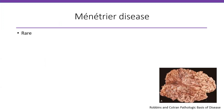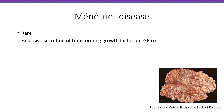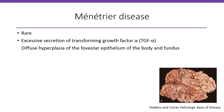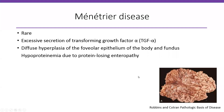Let's go over both of them. Menetrier disease is a rare disorder. Basically, you have excessive secretion of transforming growth factor alpha, TGF-alpha. You have diffuse hyperplasia of the foveolar epithelium of the body and fundus — so you have a lot of epithelial hyperplasia. You can get hyponatremia and hypoproteinemia due to protein-losing enteropathy.